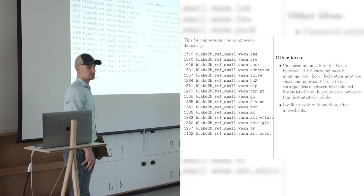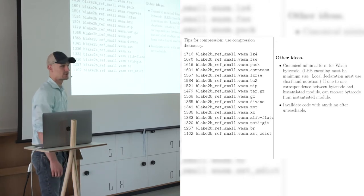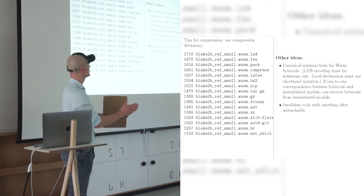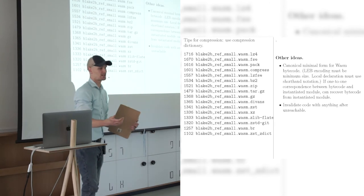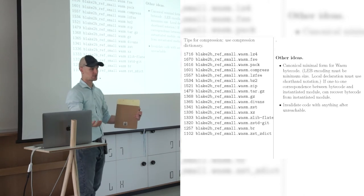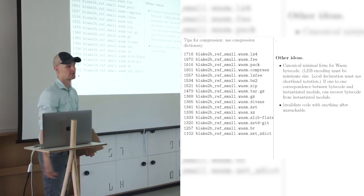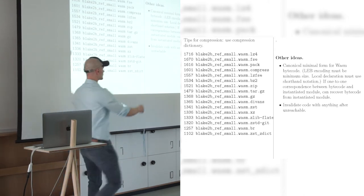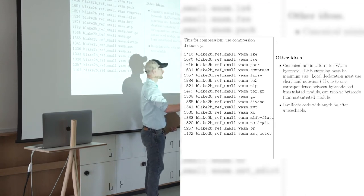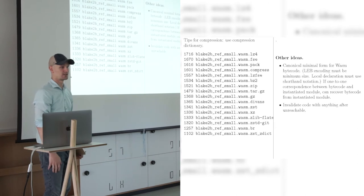Oh, boy. The LEB encoding of integers. There's a small size. There's a big size. But integers are everywhere in the bytecode. So if you, you can have some, depending on the bytecode, size reductions. What I'm pushing for is a canonical minimal form for WASM, for eWASM bytecode. So LEB encoding, LEB is minimal local declaration, must use the shorthand notation that we saw earlier. And if there's a one-to-one correspondence, so there's a question of size, do we store the bytecode and the instantiated version, things like this. Well, maybe we can only, we can recover them from each other. So if there's a one-to-one correspondence between bytecode and instantiated module, we can recover, we can slash back and forth, if that's what we have to do.